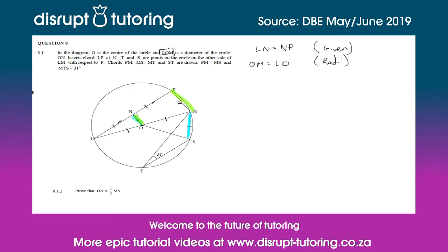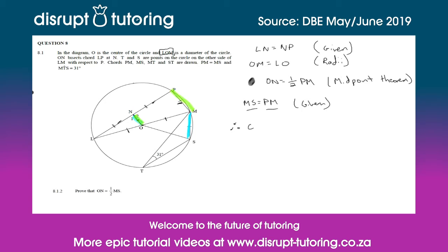So we conclude that ON equals half of PM, by the midpoint theorem. We were also given that MS equals PM, so we substitute PM with MS to get that ON equals half of MS, which is exactly what they asked us to prove.